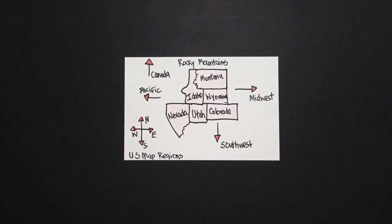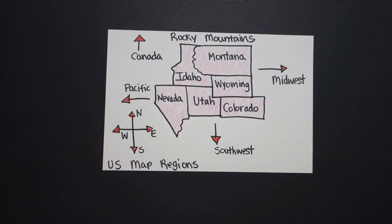Alright, let's see what this looks like all colored in. Okay, here are my Rocky Mountains U.S. map regions all colored in. We're moving east. Midwest is next. Okay, bye-bye.